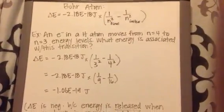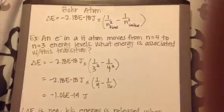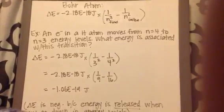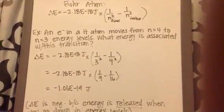So here's an example. An electron in a hydrogen atom moves from the n equals 4 to the n equals 3 energy levels. What energy is associated with this transition?